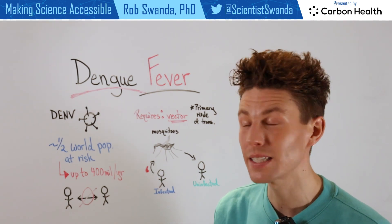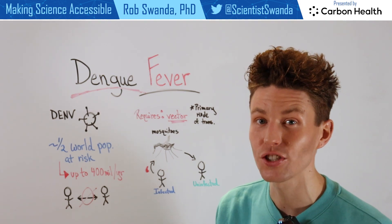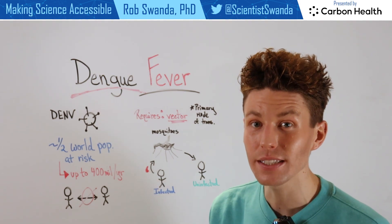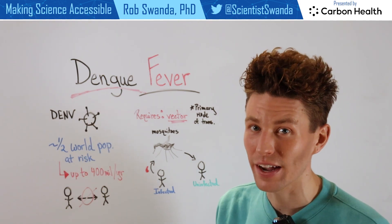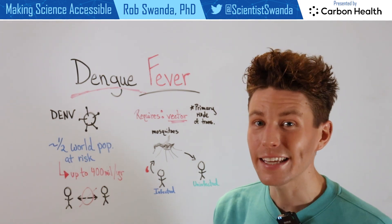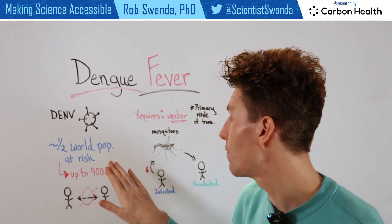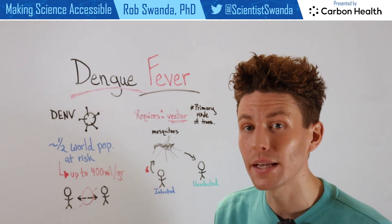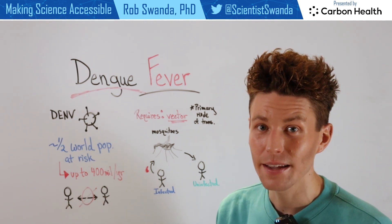That means it places more than half of the world's population at risk of a dengue viral infection. And each year, there can be up to more than 400 million cases of dengue.